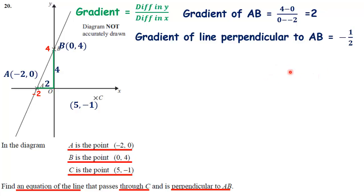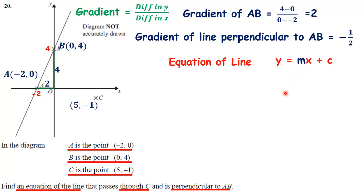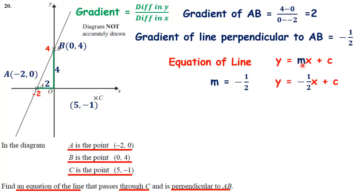The other thing I know is that the line perpendicular to AB has to go through C. So its equation is going to look like y = mx + c. I've just worked out m, the gradient, which is minus a half. So far, my equation of the line is y = -½x + c. I've just replaced the gradient m with minus a half.